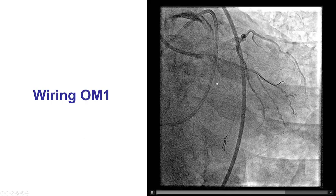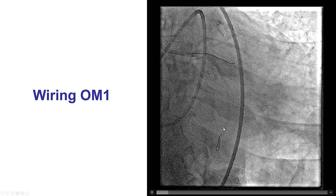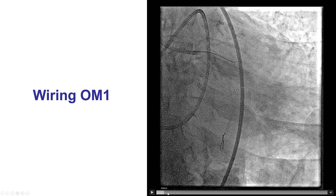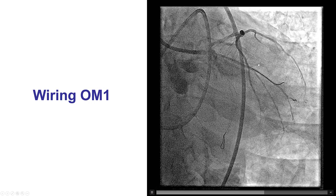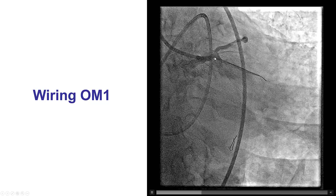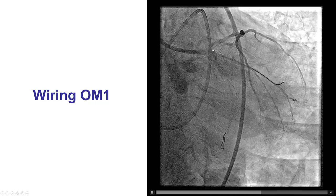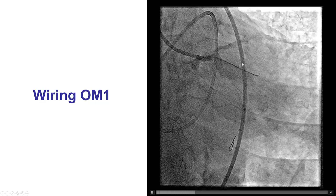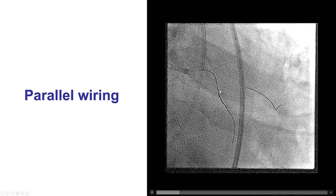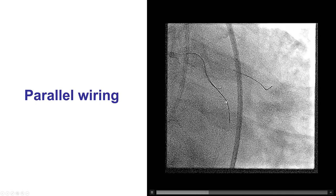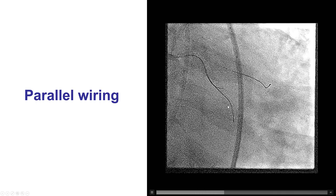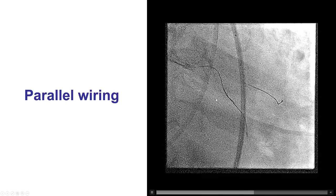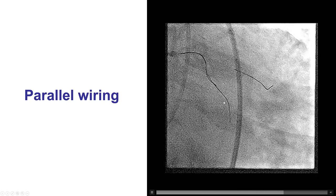In this particular case, we tried to advance the wire, but it was knuckled and entered the subintimal space. We inserted another wire into a large first obtuse marginal branch, and then tried with a second workhorse wire in the circumflex to get through the area of dissection, unfortunately without success.